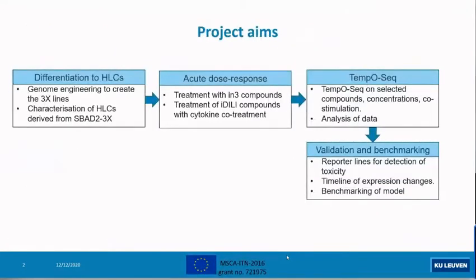Briefly, my project aims are as follows. First, I do the differentiation to hepatocyte-like cells, which I refer to as HLCs from now on. We do genome engineering to create what is known as the 3x lines in our lab — we insert gene cassettes that improve the differentiation. This is followed by characterization of HLCs derived from this line, referred to as SBAT2-3x, which is derived from the SBAT2 lines selected by the N3 consortium.